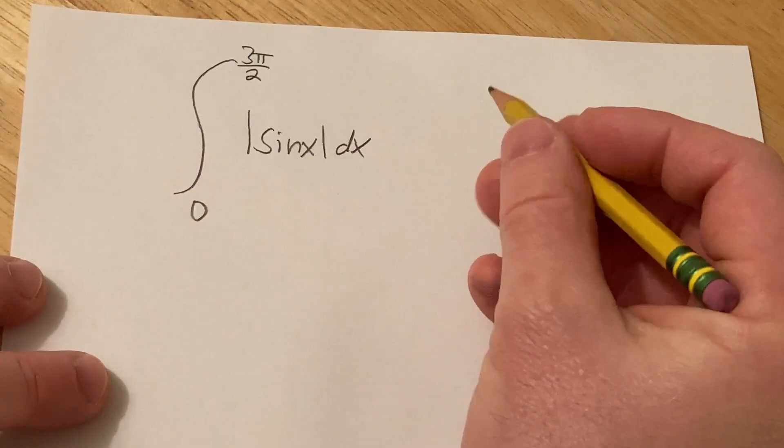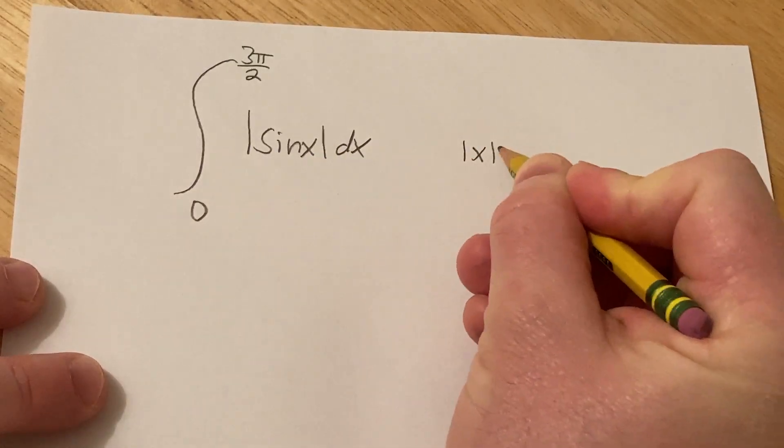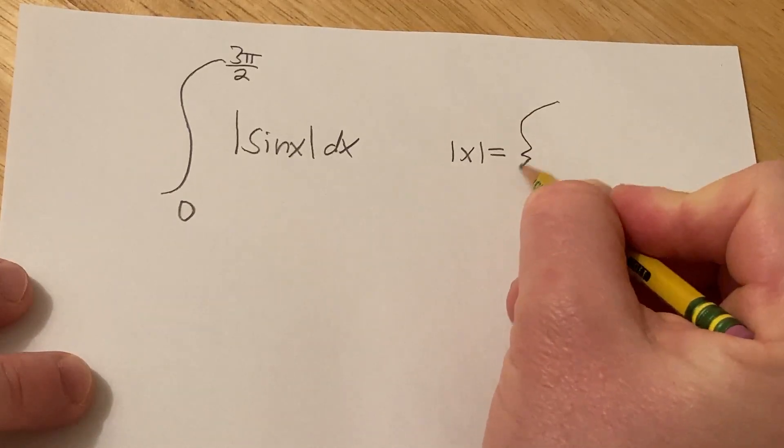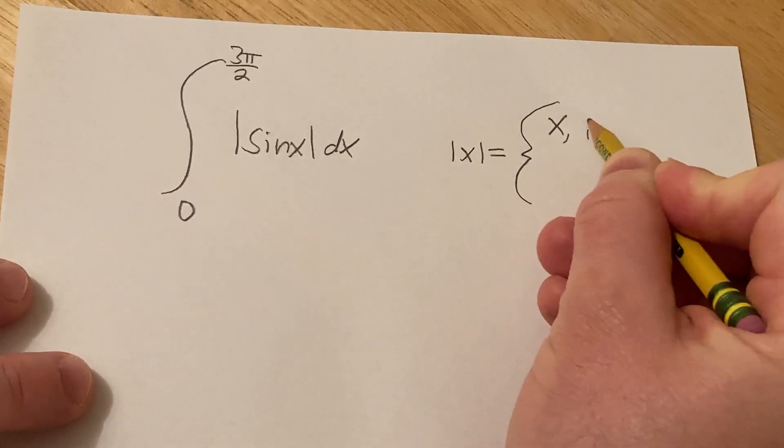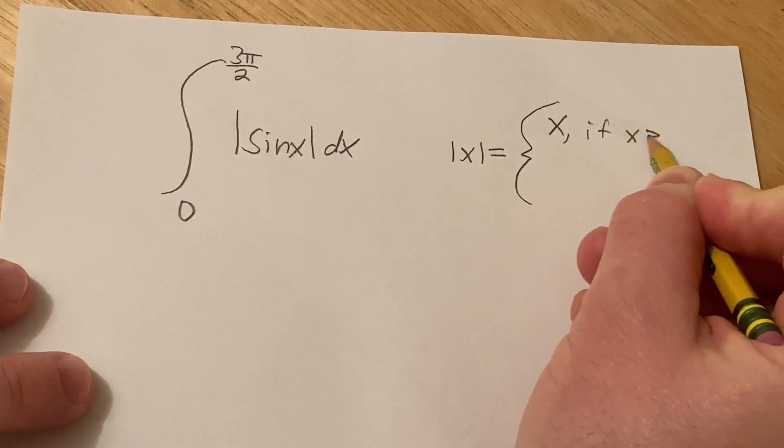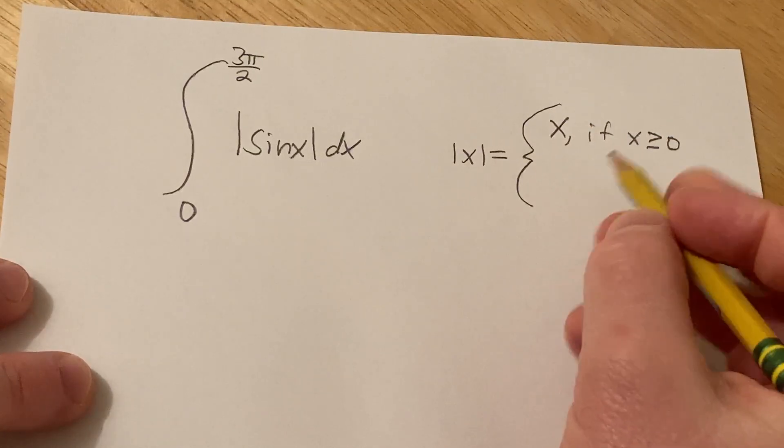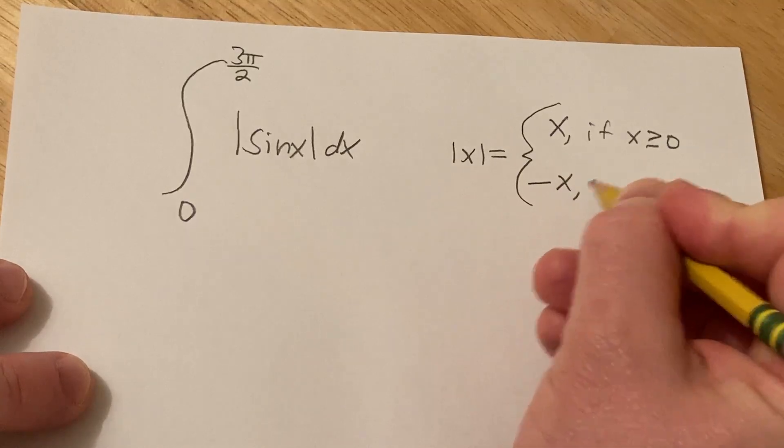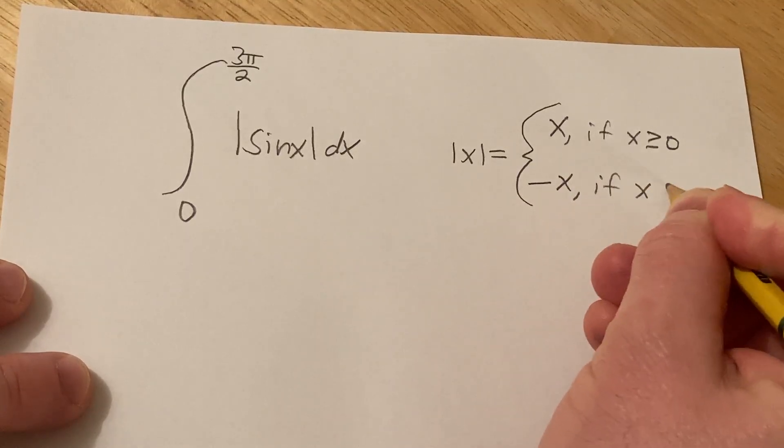Recall that if you just have the absolute value of x, you can write this as a piecewise function. It's going to be x if x is greater than or equal to 0, and it's going to be minus x if x is less than 0.